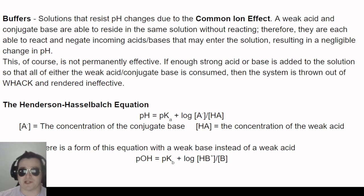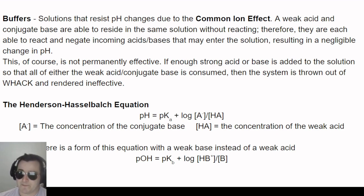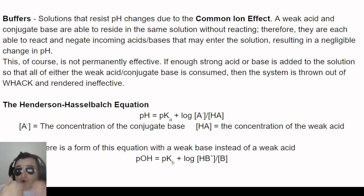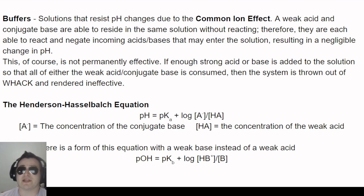The two species are closely related — only a hydrogen separates them — so they go back and forth depending on what intrudes on the system. If a base enters, the weak acid reacts with it; if an acid enters, the conjugate base neutralizes it. Because both are present and working in tandem, the buffer neutralizes virtually anything that comes in. But there's a limit to how much is available, and that is when the buffer is no more — that's the common ion effect.